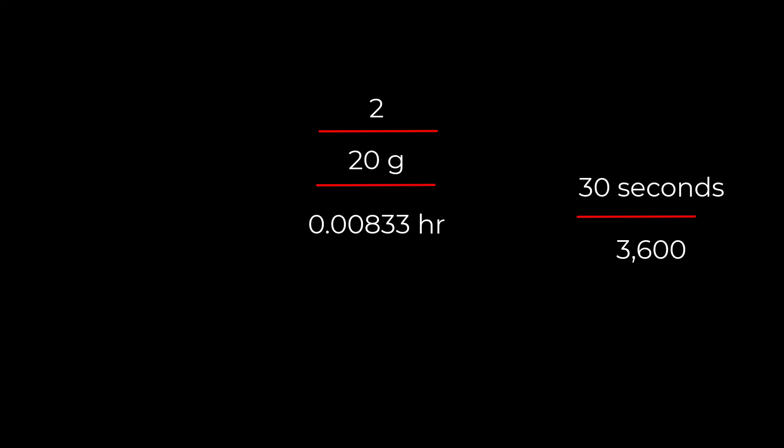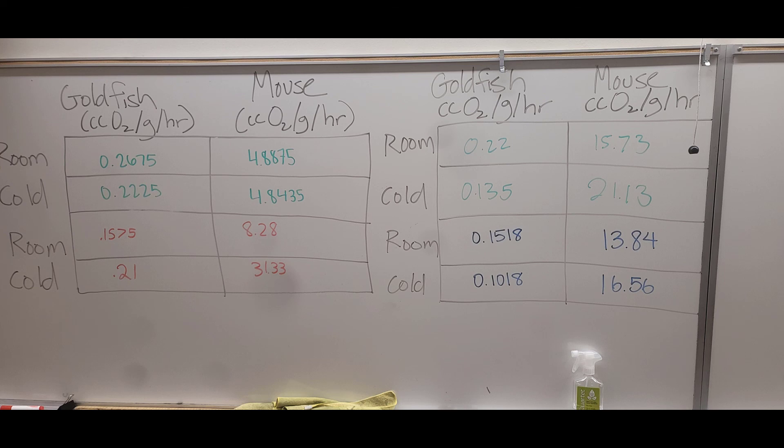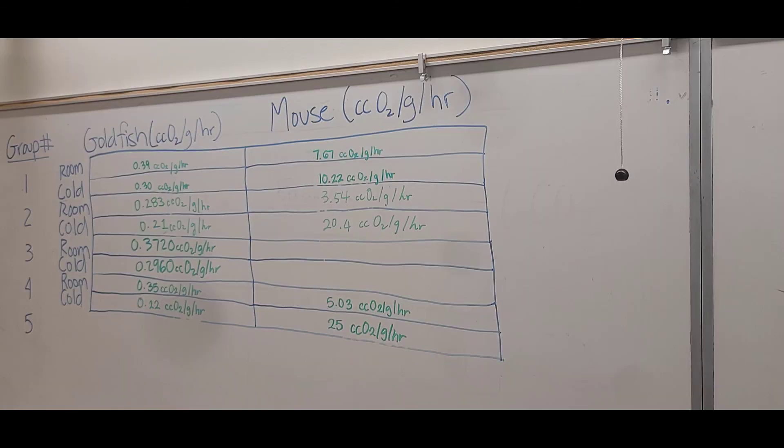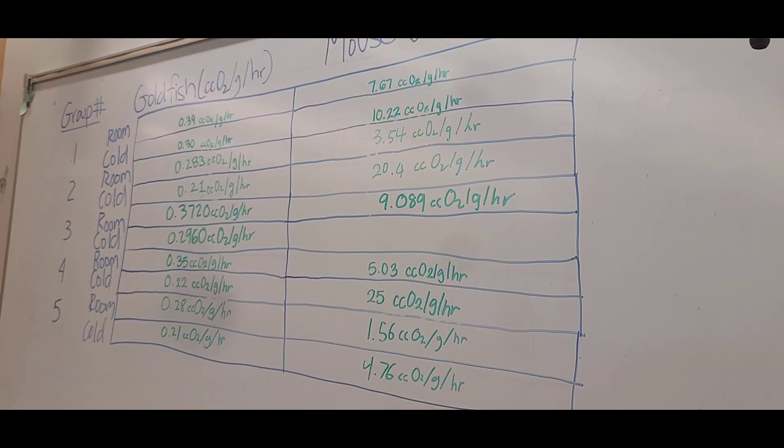Now this is some sample data from the class that we had this past week, so you can compare your data that you calculated here with some of the metabolic rates we got for room temperature and for cold temperature for the mouse. Later on you can do the same thing with a goldfish. My data that I did on the mouse in this video is not represented here, but it should give you some idea of what you're looking for. I hope that helps.